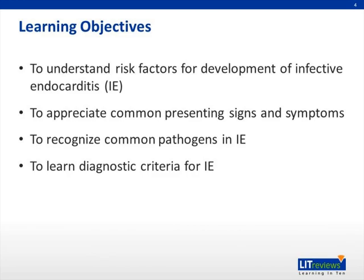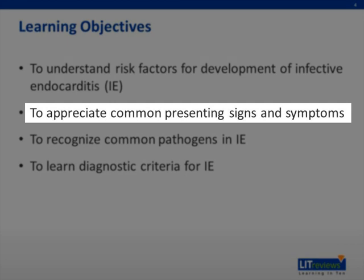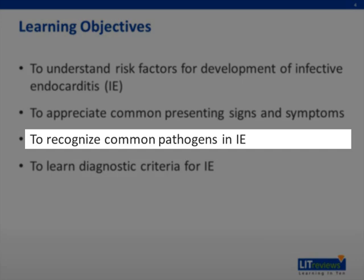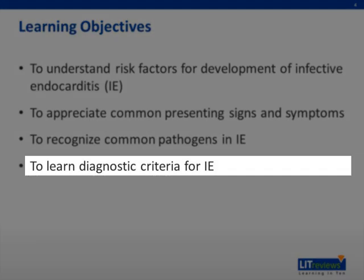This talk has a few different learning objectives. First, you will learn about risk factors for the development of infective endocarditis. Second, you will learn to appreciate common clinical presentations of patients affected with endocarditis. It will be important to recognize the different types of pathogens that most commonly cause infective endocarditis. And finally, we will review diagnostic criteria for IE, specifically the Duke criteria.